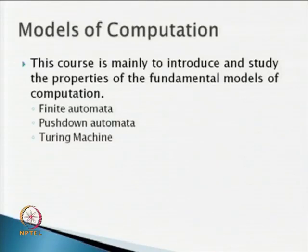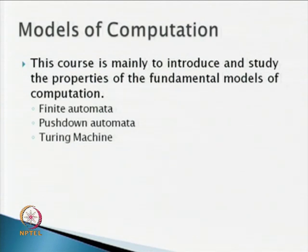This course mainly introduces and studies the properties of the fundamental models of computation. We need various kinds of abstract machines or abstract devices. We will study different kinds of models of computation and their properties. For example, we will have a very simple model called finite automata, then push-down automata, and then the Turing machine, which is the most powerful of all those models. We introduce those machines and study their various properties.